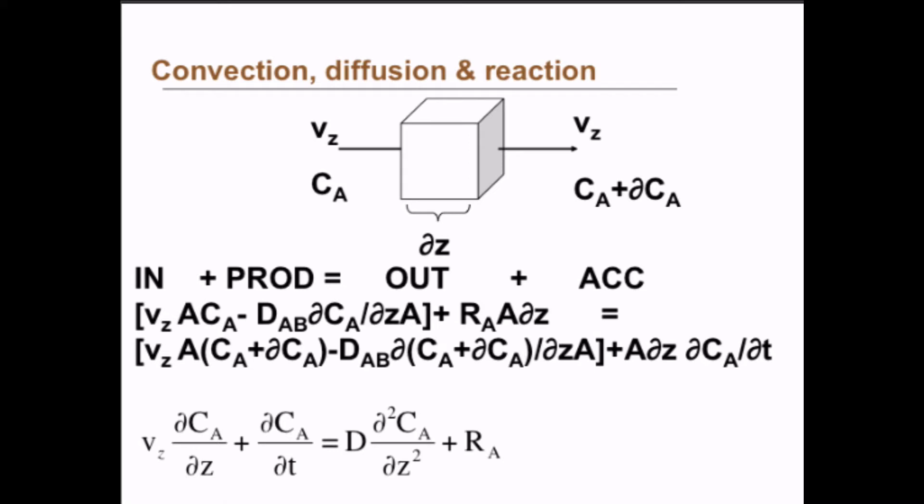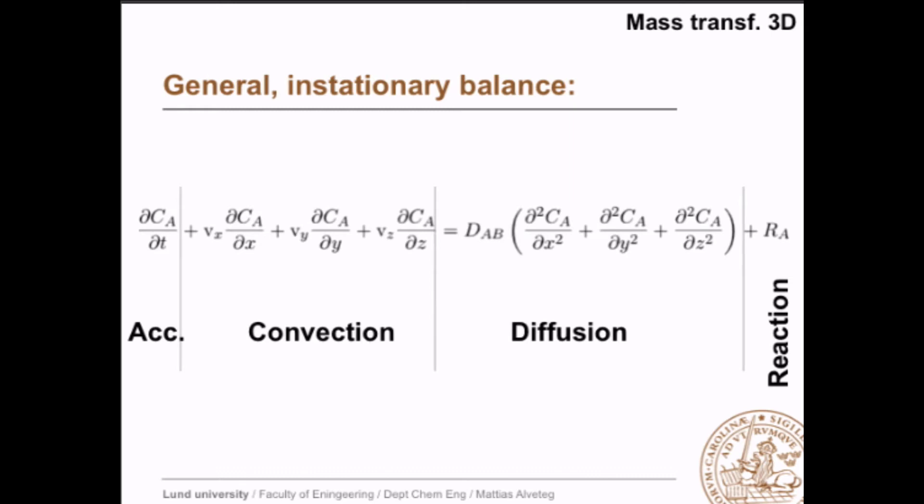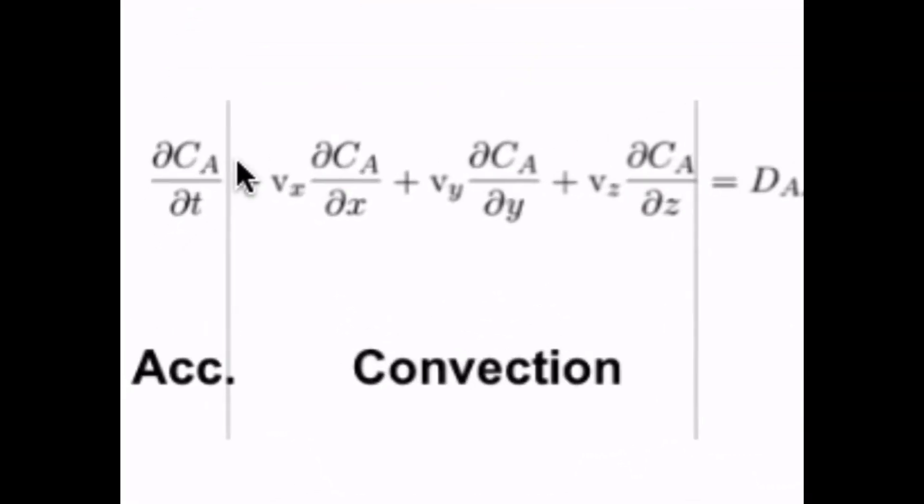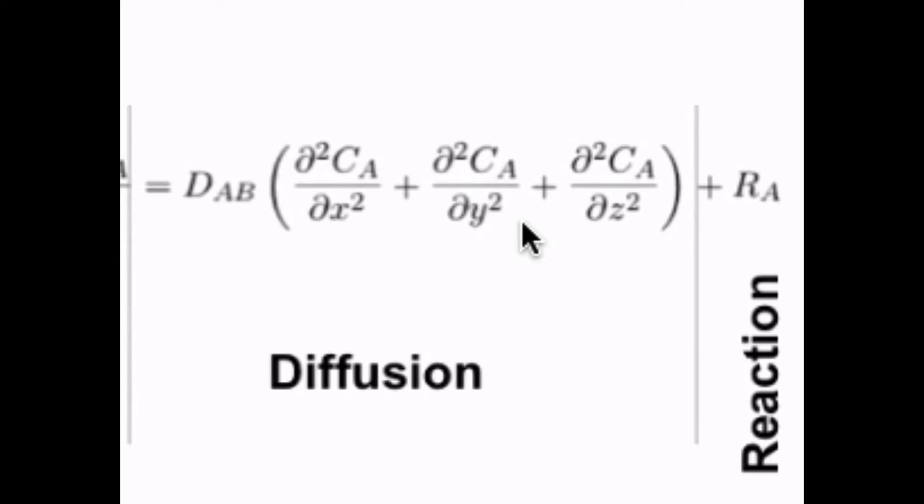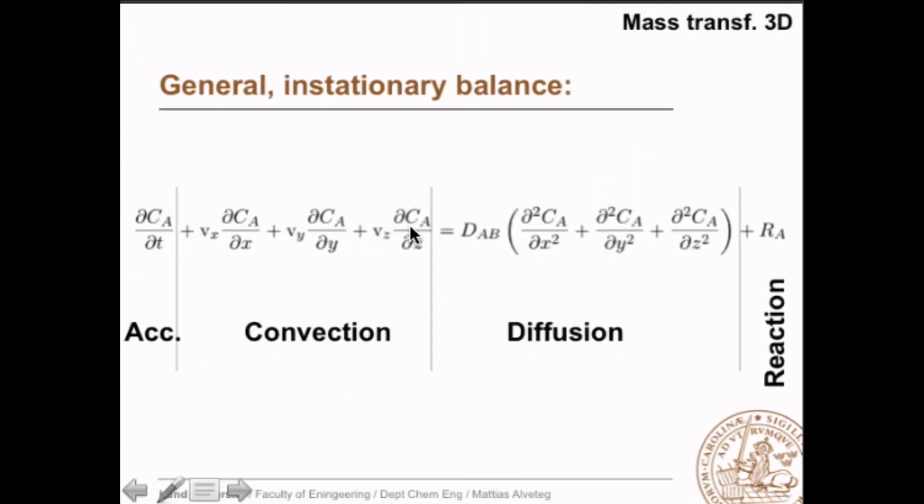So by this I think we have made plausible at least that the 3D mass balance will look something like this: ∂CA/∂t is the accumulation term. We have a convection term here in three different directions: vx, vy, vz. We have the diffusive part here, where we have second order derivatives. Note here that when we talked about diffusion in the 1D case, one dimension case, we had the first derivative of concentration, now we have the second. And on this side we have the first derivative of concentration, while we had simply the concentration when we looked at the 1D solution or 1D case. And we have the reaction term over here.